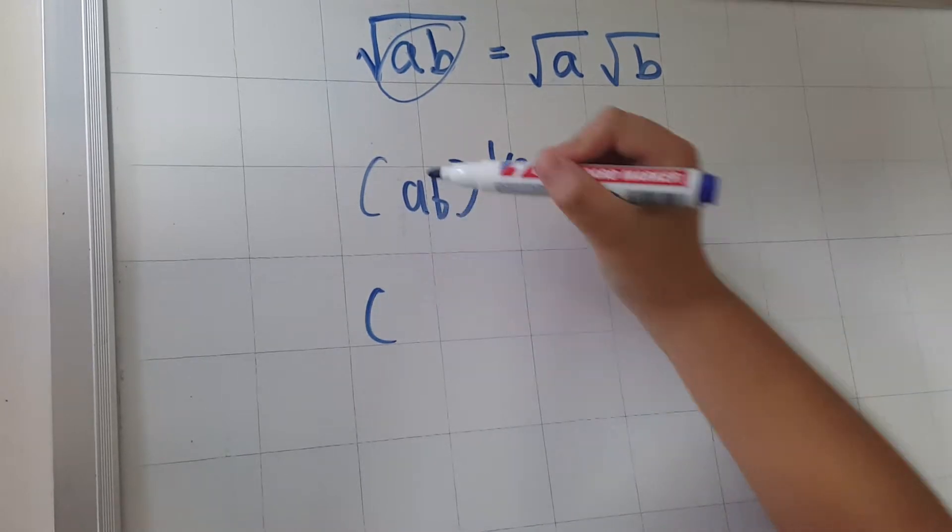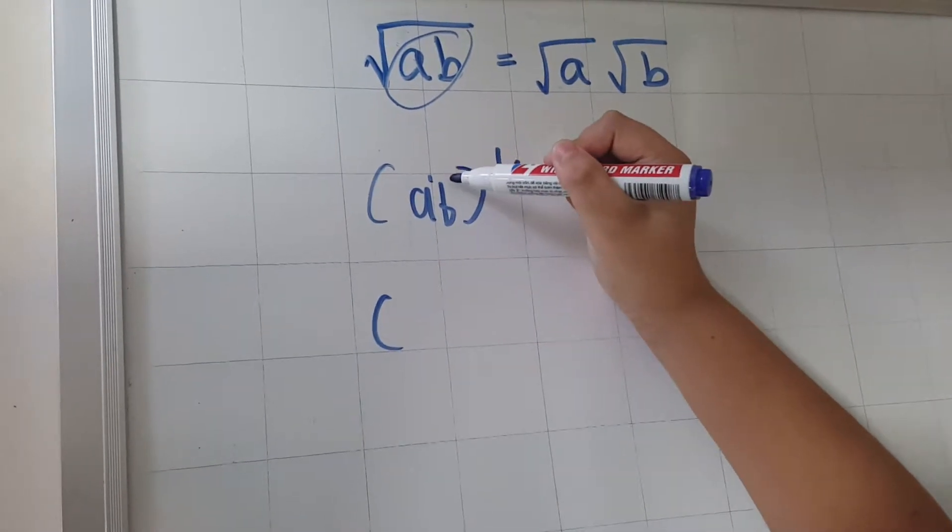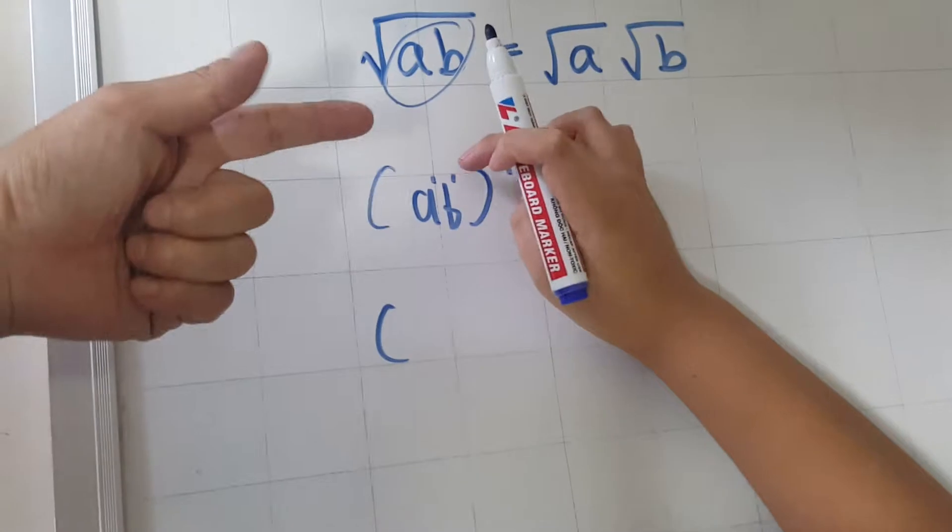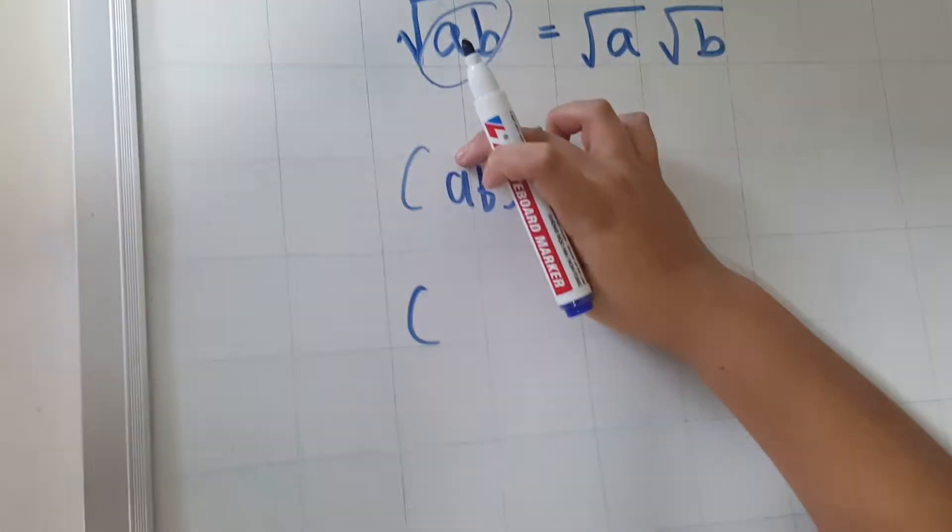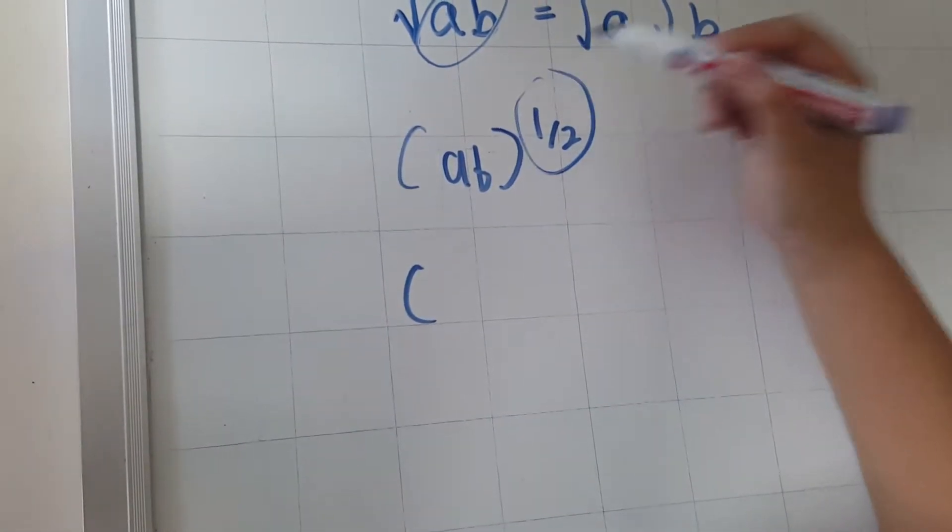And we're also going to imagine that it's being times by the power of 1, because A to the power of 1 is A, B to the power of 1 is B. So you just replace it with this.